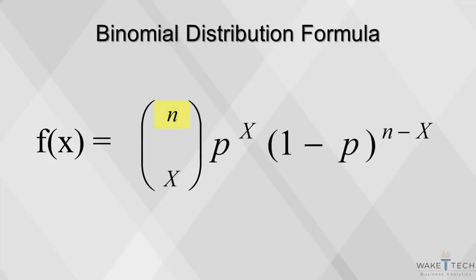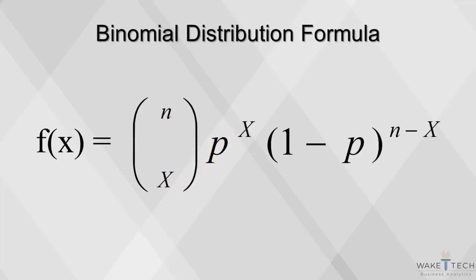n is the number of trials. x is the number of successes out of n trials. p is the probability of success, and 1 minus p is the probability of failure.